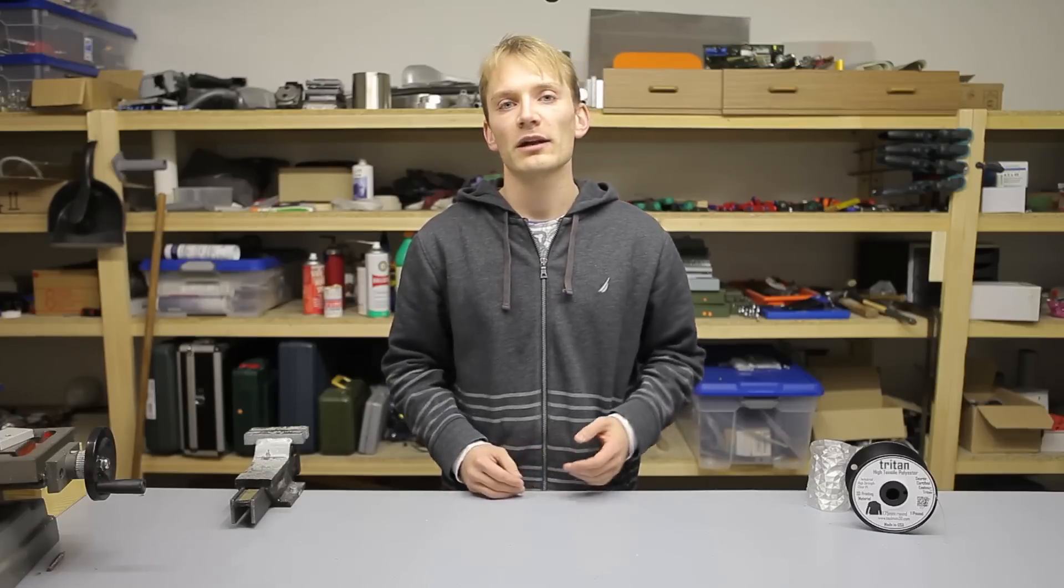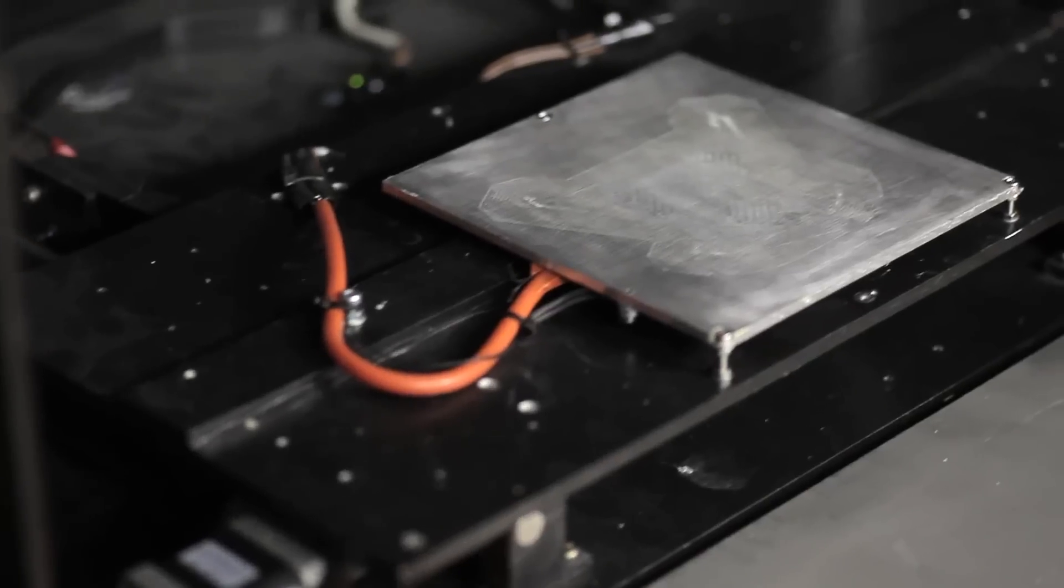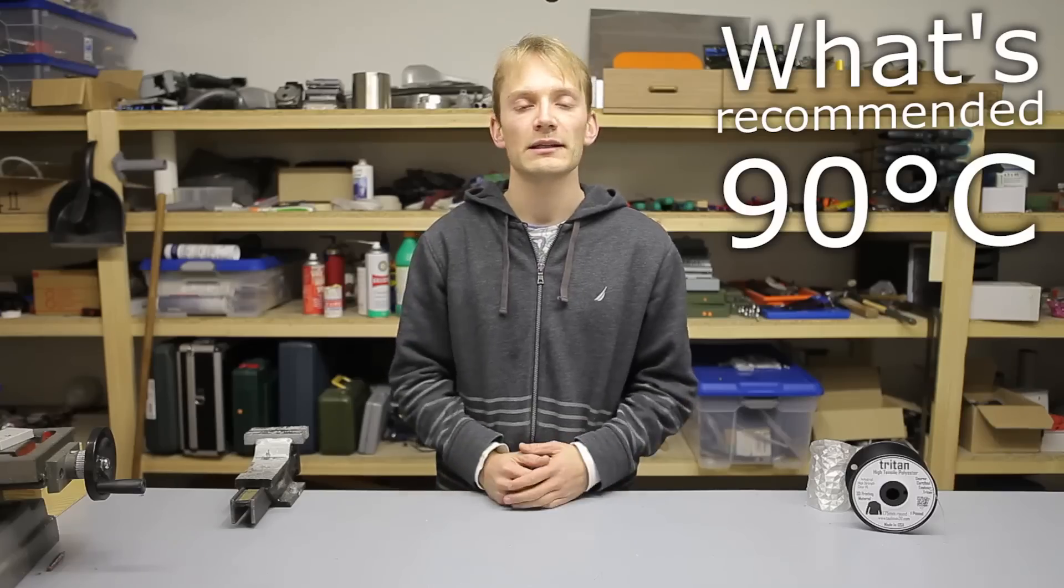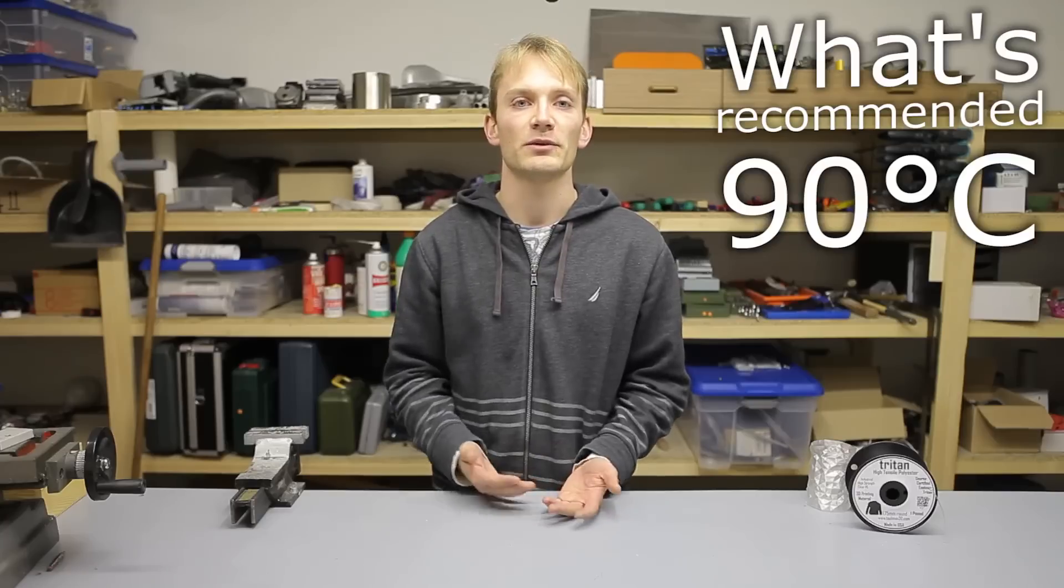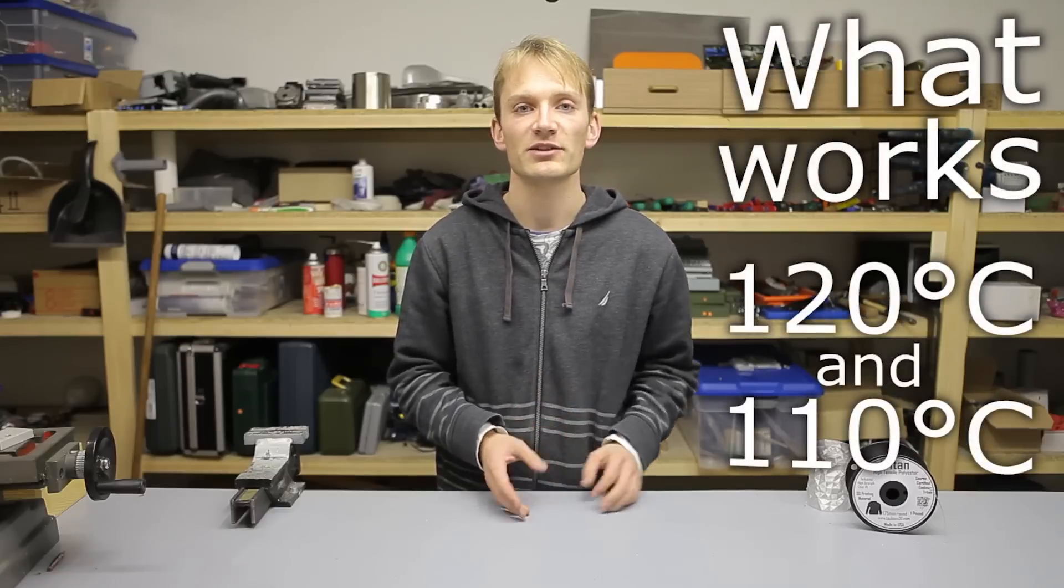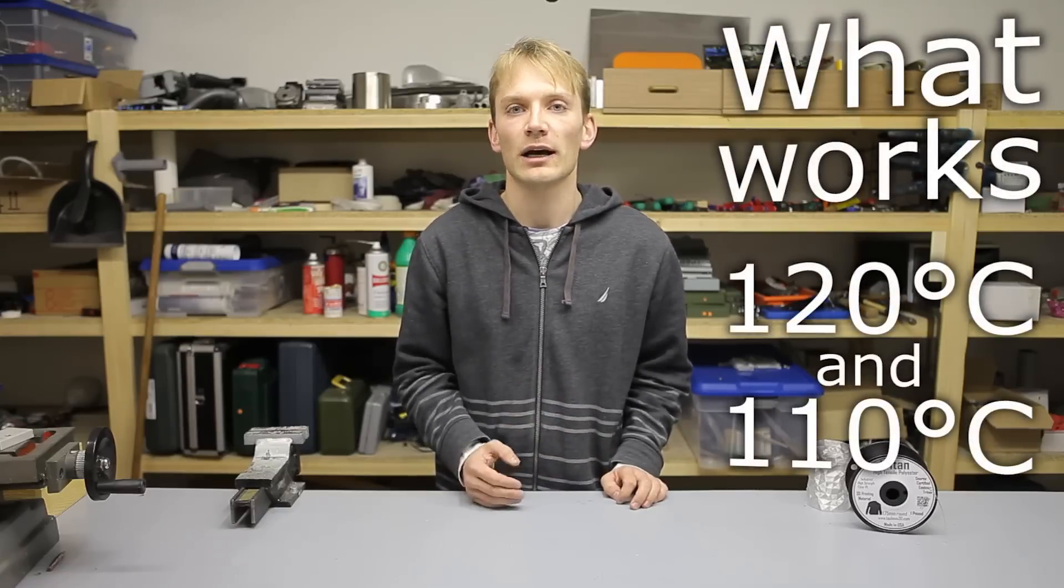One thing that took me a while to figure out was what kind of surface to print Triton onto. Tallman recommends a bed temperature of 90 degrees Celsius and I figured that was onto clean glass or Kapton, as that's what works for regular PET, but neither of those, nor blue tape, green PET tape, glue stick or hairspray worked out. And I actually lost yet another heat break to having to clean off the hotend one too many times here. What ultimately worked was simply bumping the bed temperature to 120 degrees Celsius for the first layer and 110 for the rest.